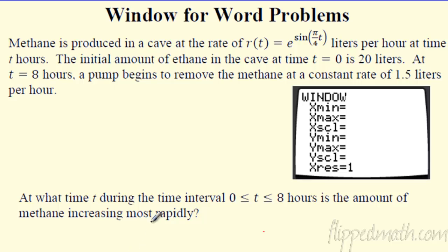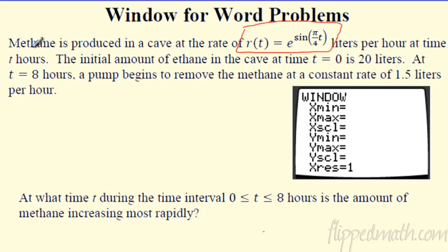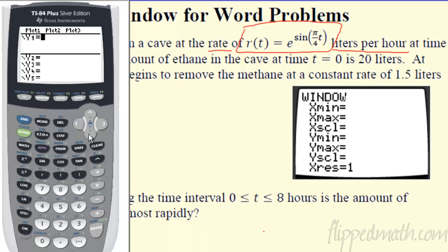Now for the free-response style question — pause and read it if you haven't yet. The key idea: they give you a weird-looking equation representing the rate at which methane is produced in a cave — liters per hour over time. These rate-of-change graphs will appear a lot: there's always a 'per' in the units, compared to time. We need to find the right window for this problem.